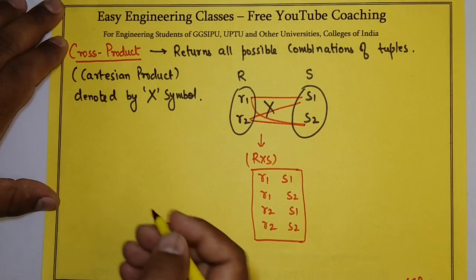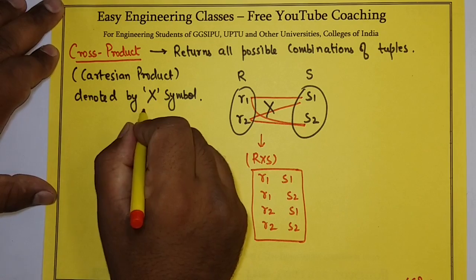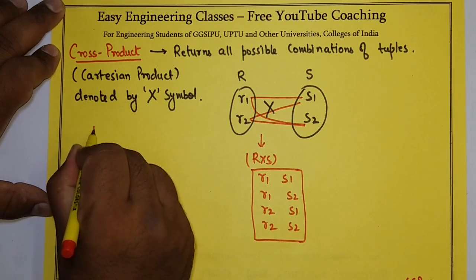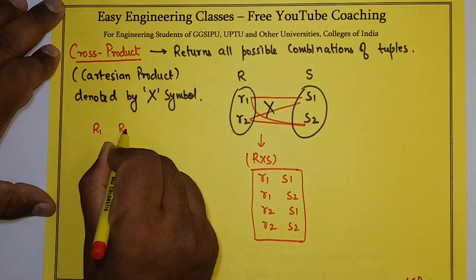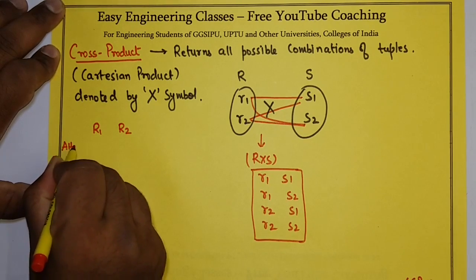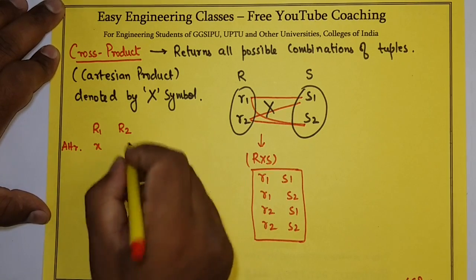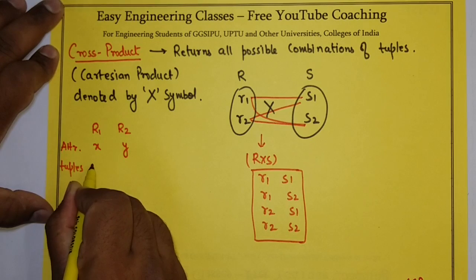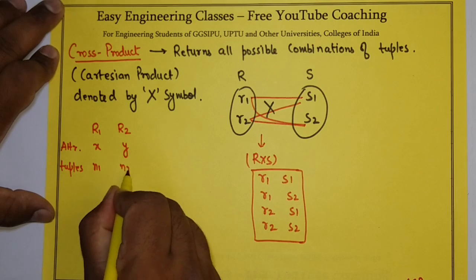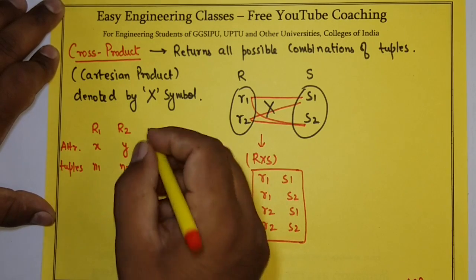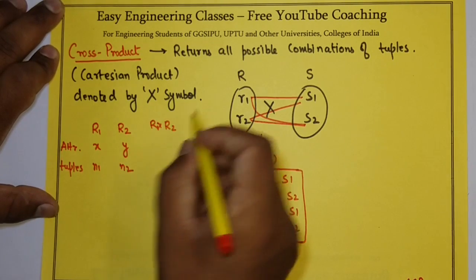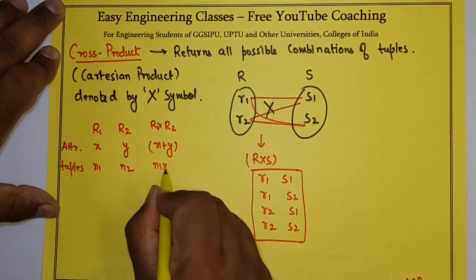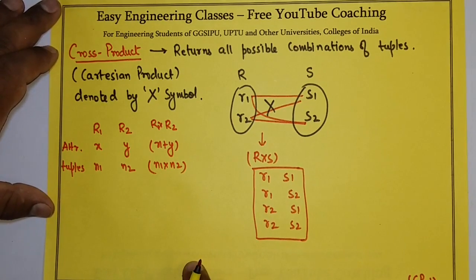So how will you know that after cross product, how many tuples and attributes a result will have? For this, you need to remember this. Suppose there is relation R1 and R2. R1 has X number of attributes, R2 has Y number of attributes. R1 has N1 number of tuples, R2 has N2 number of tuples. So the cross product of R1 and R2 will contain X plus Y number of attributes and N1 into N2 number of tuples.